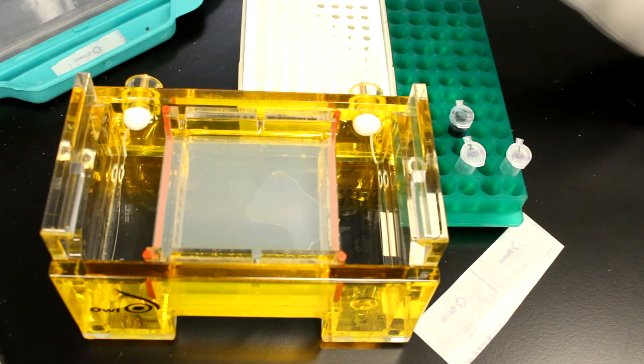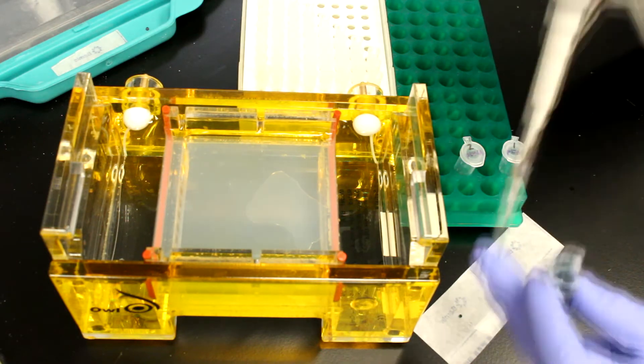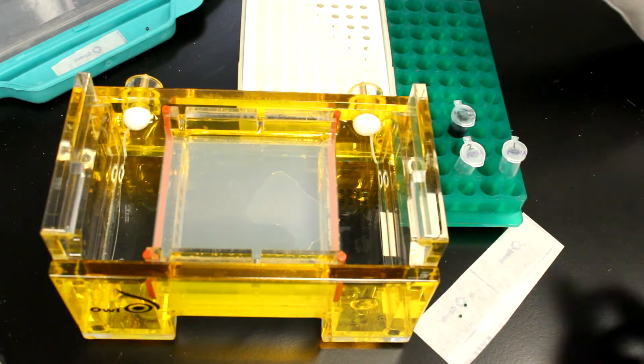To begin, two microliters of agarose loading buffer per sample is pipetted onto a piece of parafilm. In this example, we have two purified PCR products to visualize.